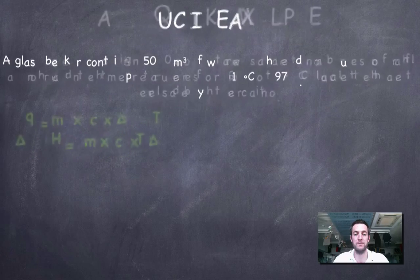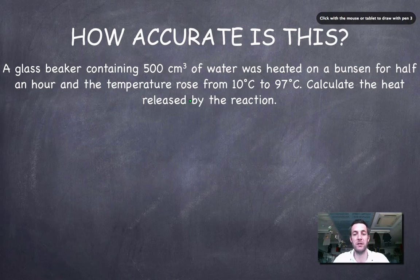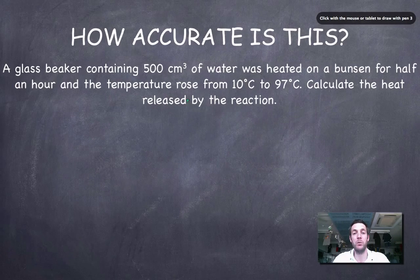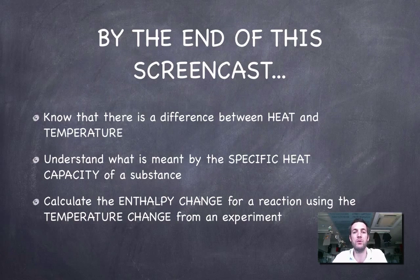How accurate is that calculation? If asked in an exam about sources of error: we didn't stir the water; we're heating it in a glass beaker, which is a poor conductor of heat; and we're using a Bunsen burner, which also heats the tripod, gauze, and surrounding air. So this isn't a very accurate calculation. If our experimental value differs significantly from a literature value, these would be reasons we could give for the discrepancy.